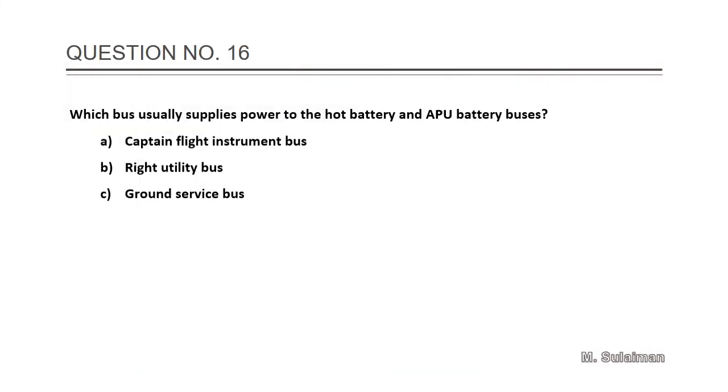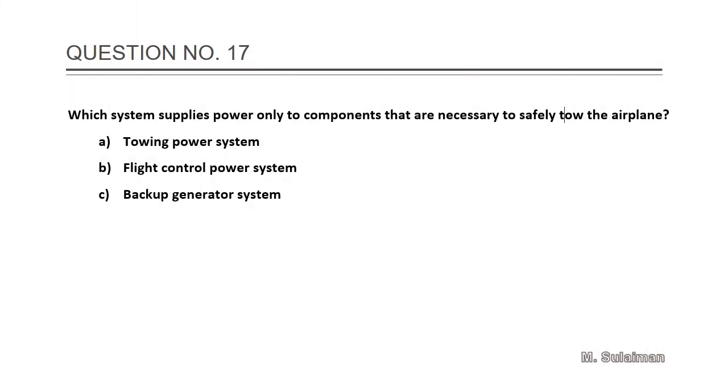The answer is B: the battery and battery two buses. Question number 16: Which bus usually supplies power to the hot battery and APU battery buses? Answer is C: ground service bus. Number 17: Which system supplies power only to components that are necessary to safely tow the airplane?